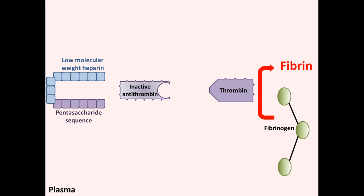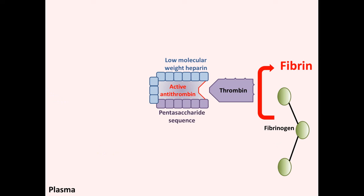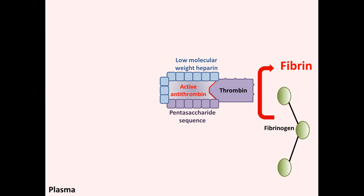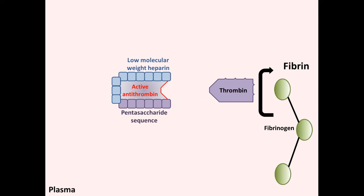However, with low molecular weight heparin, it does bind to the inactive antithrombin, activating it. This accelerates the interaction between the active antithrombin and thrombin, which is responsible for the inhibition of fibrin production from fibrinogen. However, low molecular weight heparin is too short to bridge the antithrombin to thrombin, which explains its reduced activity on thrombin.